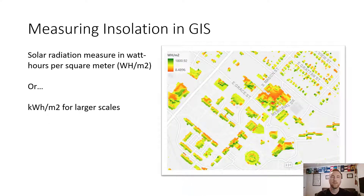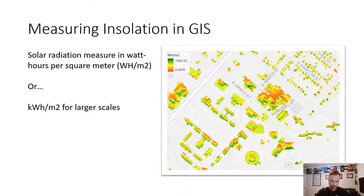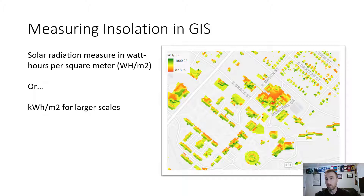Once you run these tools, you end up with an insolation map. The solar radiation measure is in watt-hours per square meter, or at larger scales kilowatt-hours per square meter — that's the measurement used to calculate the amount of energy solar panels will generate on a rooftop. The greens in the output represent higher watt-hours per square meter, and orange colors represent lower wattage. Factors involved include the angle of the rooftop surface, whether it faces north or south, whether it's flat, and whether there are obstructions like trees nearby.